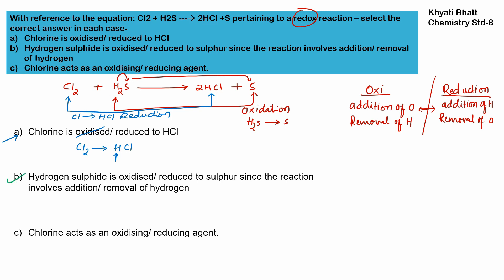Hydrogen sulfide (H₂S) is oxidized to sulfur since the reaction involves removal of hydrogen. When removal of hydrogen occurs, that is oxidation. So H₂S is oxidized — not reduced. The reaction is an oxidation reaction, and sulfur is the species being oxidized here.